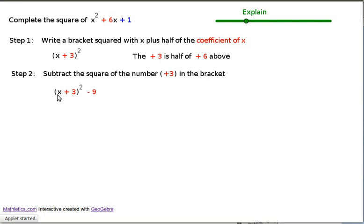And so you end up here with x plus 3 all squared minus 9, and where this 9 is the square of this 3, and it's always subtracted.